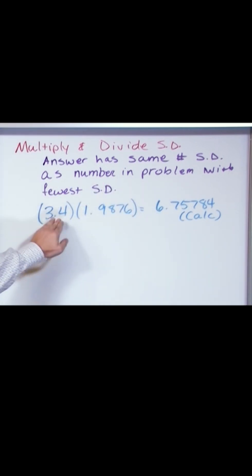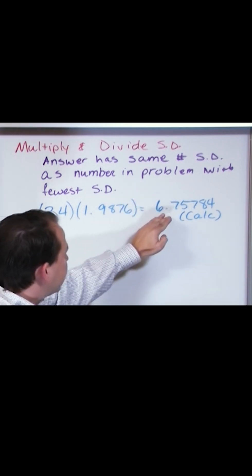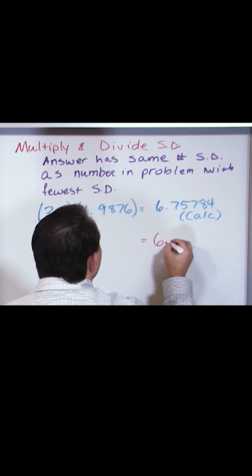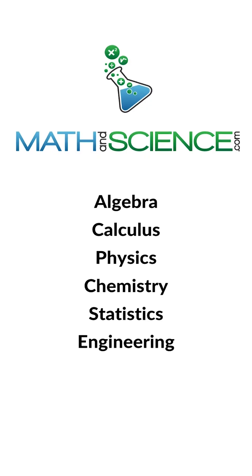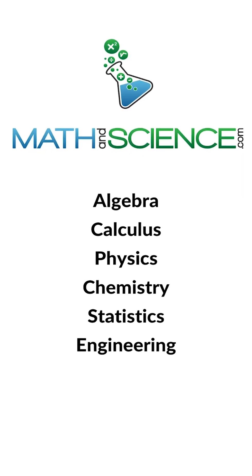In other words, this number has two significant digits. Therefore, my answer must have two significant digits. So the way I'm going to write that is 6.8.